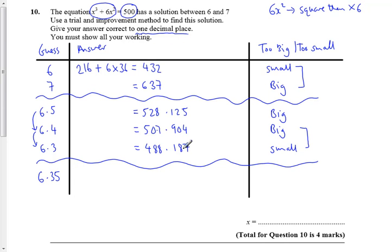Let's tap this in quick, I'm running out of time. 6.35³ + 6 lots of 6.35² and I get the answer 497.982875, and that answer is still too small.